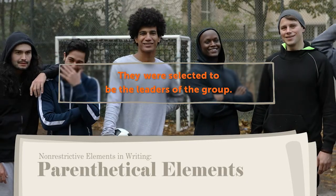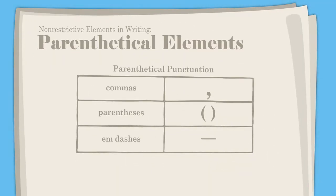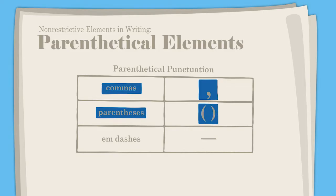"They were selected to be the leaders of the group." To avoid confusion, parenthetical elements are usually set off by some form of punctuation. Parenthetical punctuation includes commas, parentheses, and em dashes. The type of punctuation used depends on the degree of interruption caused by the interrupter. Commas are the lowest degree of interruption. Parentheses are a middle grade of interruption. Finally, em dashes are used for the highest level of interruption.